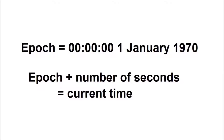The problem comes from how Unix and the underlying C programming language tracks the time. The time consists of two elements: an epoch, which is a particular point in time — for C and Unix this is midnight of Greenwich Mean Time on January 1st, 1970 — and a counter that counts the number of seconds that have passed since the epoch. When the computer needs to know the current time, it adds the number of seconds in the seconds counter to the epoch, and this gives us the current time.